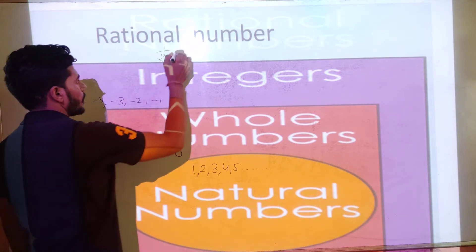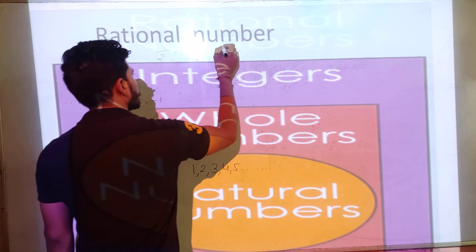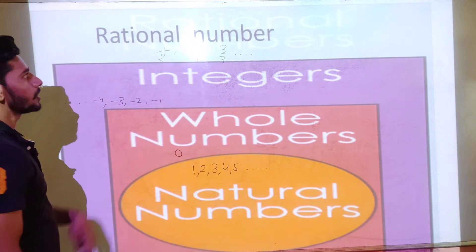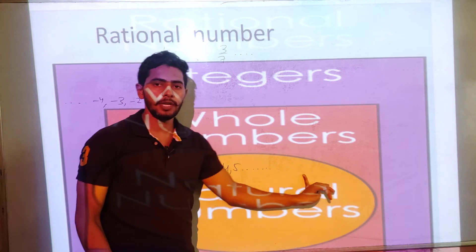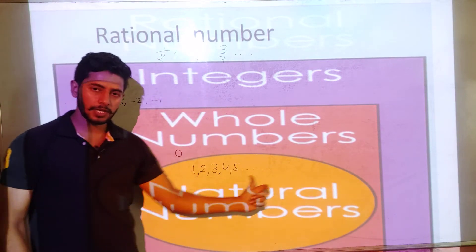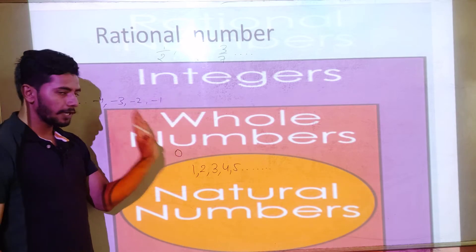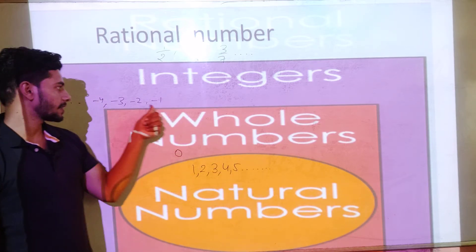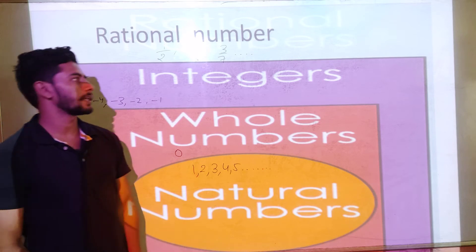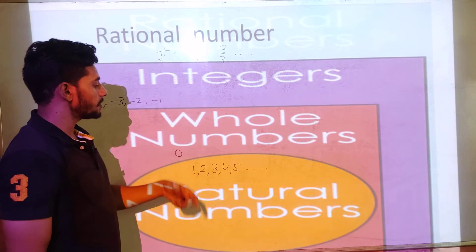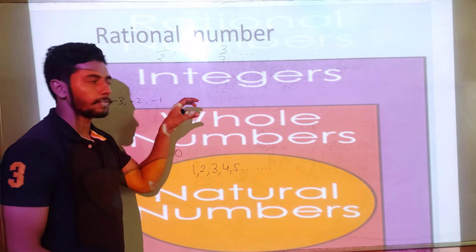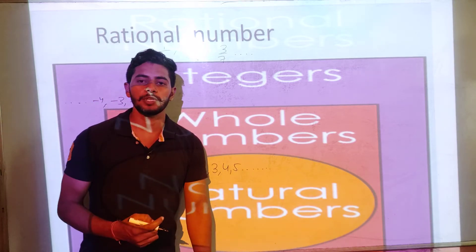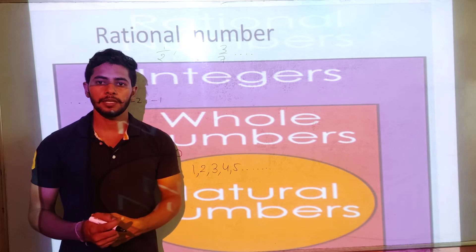If we also include fractions like 1/2, minus 4/3, and 3/7, the whole set is called rational numbers. Natural numbers start from 1 and go to infinity. Whole numbers start from 0 and go to infinity. Integers include 0, all positive and all negative numbers. And if we also include fractions like 1/2, minus 4/3, 3/7 — all types of numbers together form rational numbers.